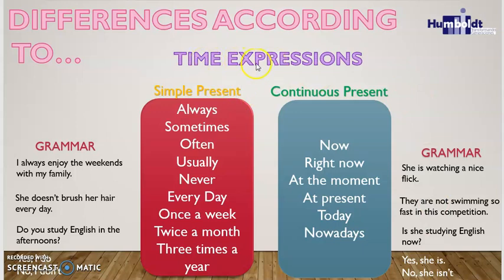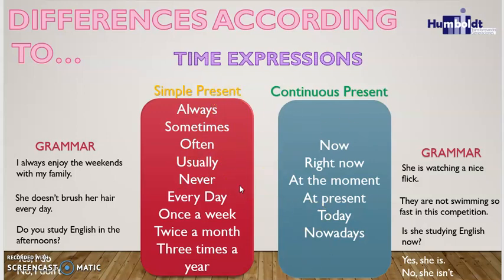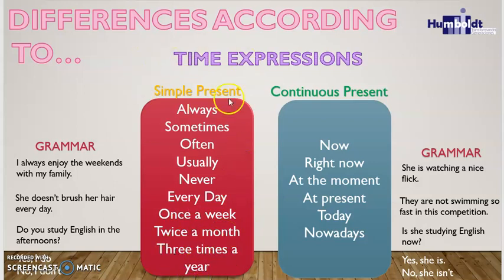Now let's analyze the time expressions in both tenses. For the simple present we use adverbs of frequency: always, sometimes, often, usually, never, and others. This is really important for differentiating both tenses in an exercise. When a sentence contains adverbs of frequency, as well as expressions like 'every day,' 'once a week,' 'twice a month,' or 'three times a year,' we are using simple present because it refers to routines.